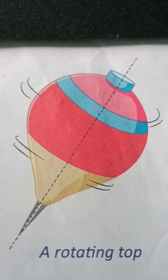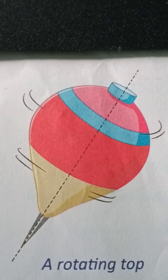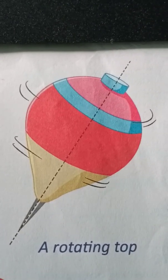If we spin a top, it moves round and round while staying at the same place. The top is said to spin about a line passing through its center. We cannot see this line, so it is called an imaginary line. Let's observe in the picture — this is how a top rotates.